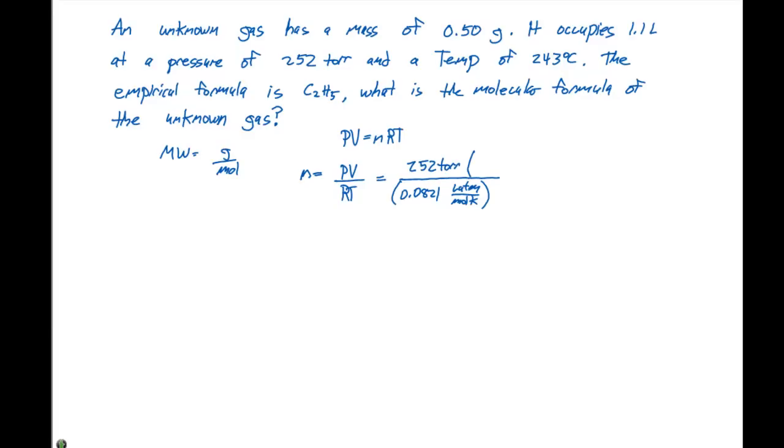We need to convert this to atmospheres. One atmosphere is 760 torr. Next, our volume is given to be 1.1 liters, so we don't need to convert that. Our temperature is given to be 243°C, which we need to convert to Kelvin by adding 273.